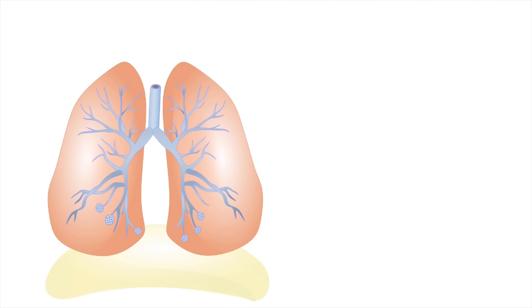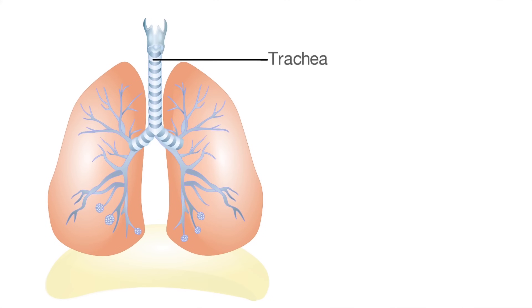The first thing we need to do is label the structures associated with the lungs. We start off with the trachea — effectively the windpipe. When you breathe in through your nose, the air rushes through the back of your nose and down the trachea. The trachea has white bands of cartilage which keep it open so that you can breathe all the time.